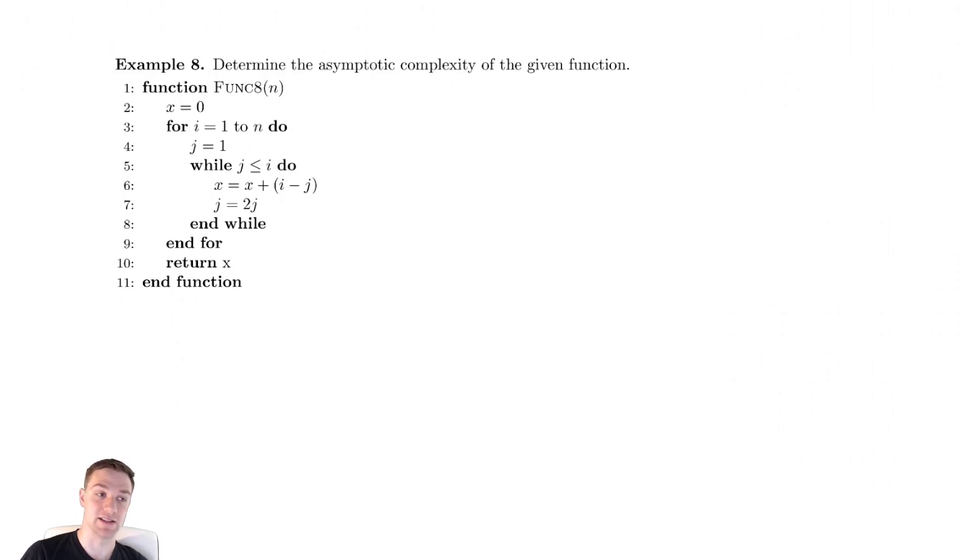In our next example, it's a lot like the previous example, except we have added in a small wrinkle, which is that the summation index of the outer for loop is going to appear inside of our while loop. So, let's crack to it.